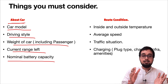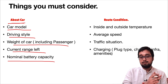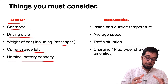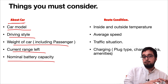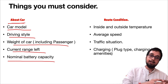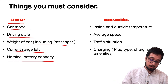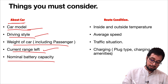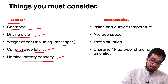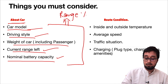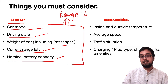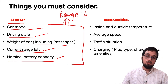It also gives you information about the range you can drive. When talking about car-related factors for predicting range and route, you must consider: car model, driving style, weight of the passenger, weight of the car, current range, and nominal battery capacity. These things will help you in predicting the range at a very good percentage.